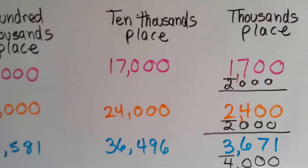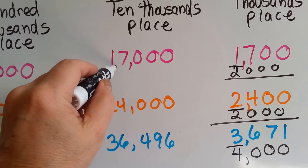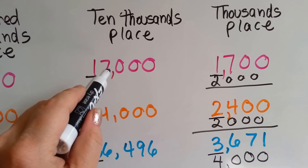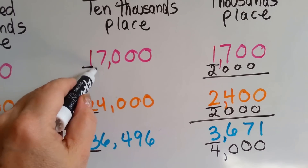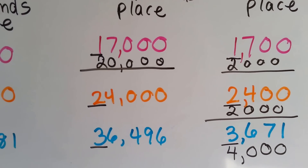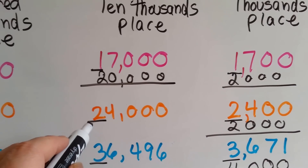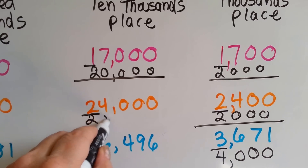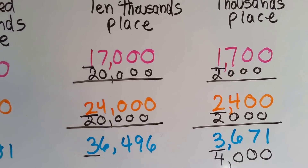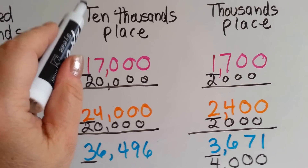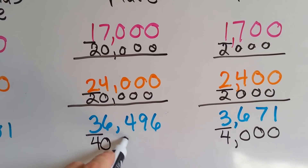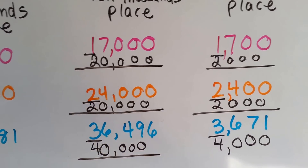Let's try rounding to the ten-thousands place. Identify the place value you're rounding. The 7 tells the 1 to go up. When it's finished, it and everybody behind it turns into a 0. The 4 tells the 2 to stay the same — it turns into a 0 when done, and so does everybody behind it — and it rounds to 20,000 for the ten-thousands place. The 6 tells the 3 to go up, it becomes a 4, finishes its job, and becomes 0s.